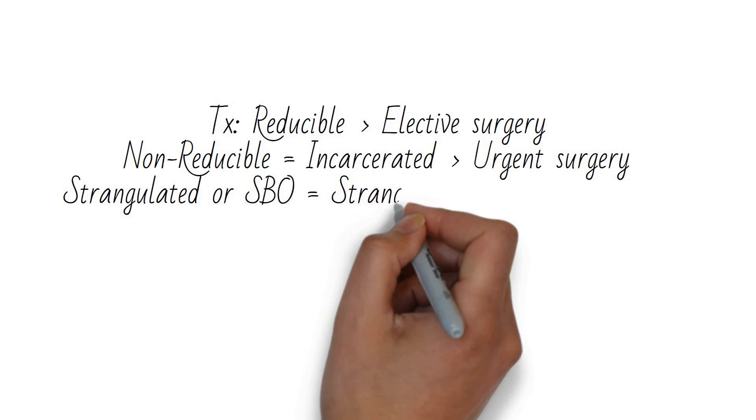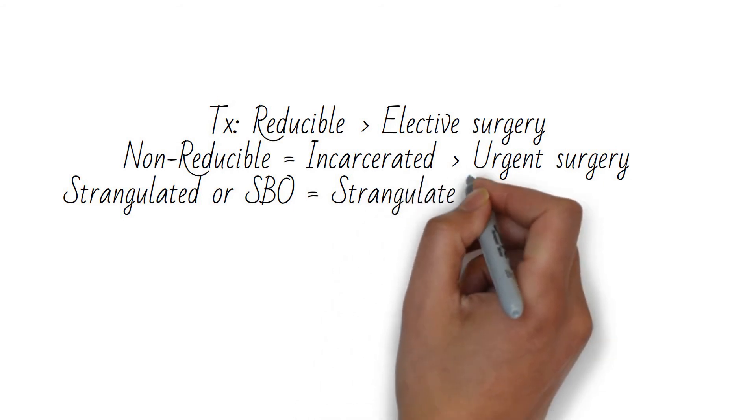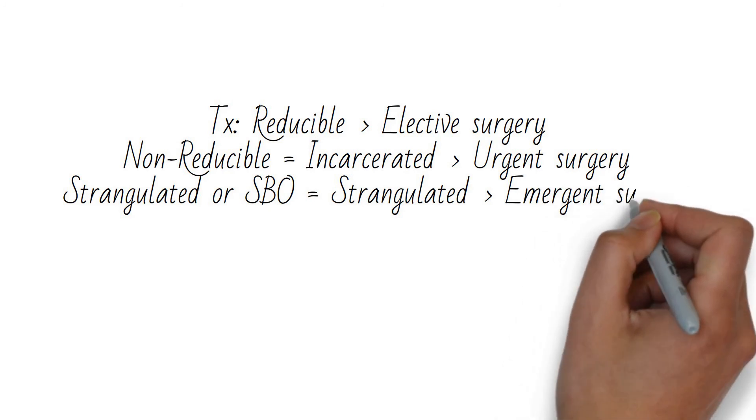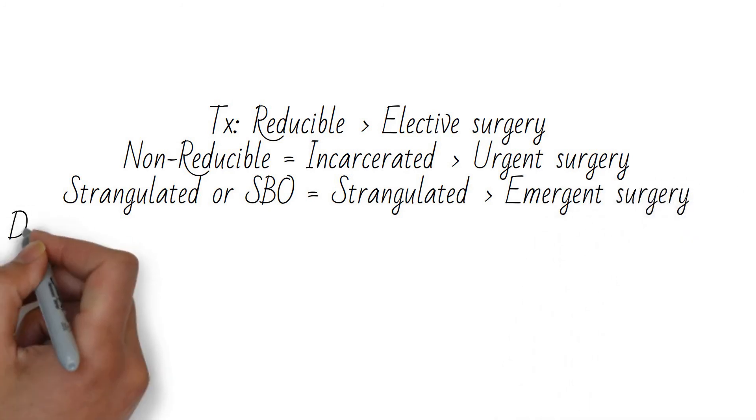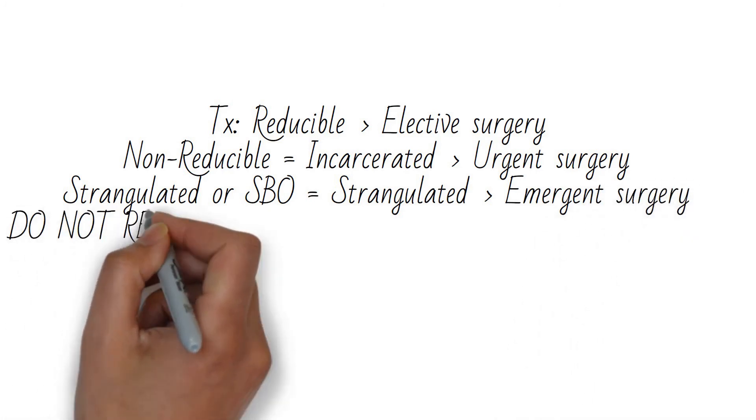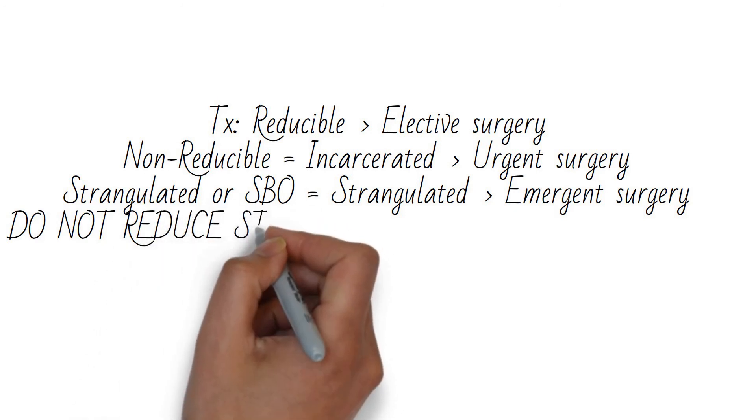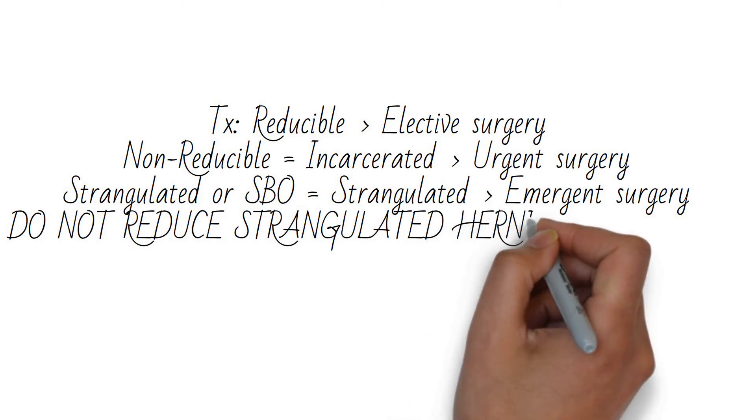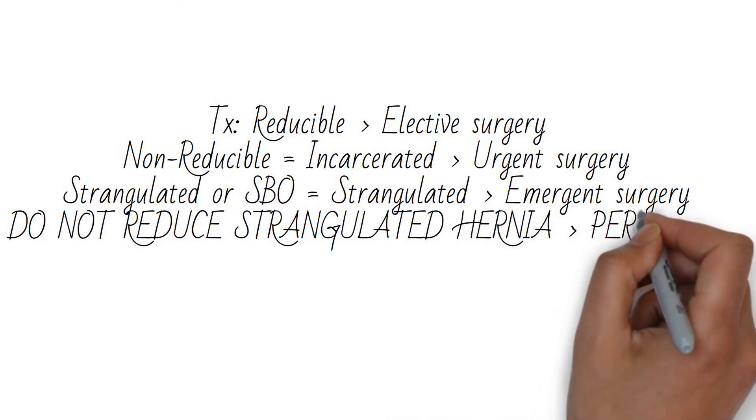Many resources say to attempt to reduce an unreducible hernia manually with the patient in Trendelenburg, but in real life, a non-reducible hernia with signs of ischemia should not be reduced, as this requires pushing ischemic, possibly infarcted, bowel back into the abdomen. This may lead to peritonitis and sepsis.